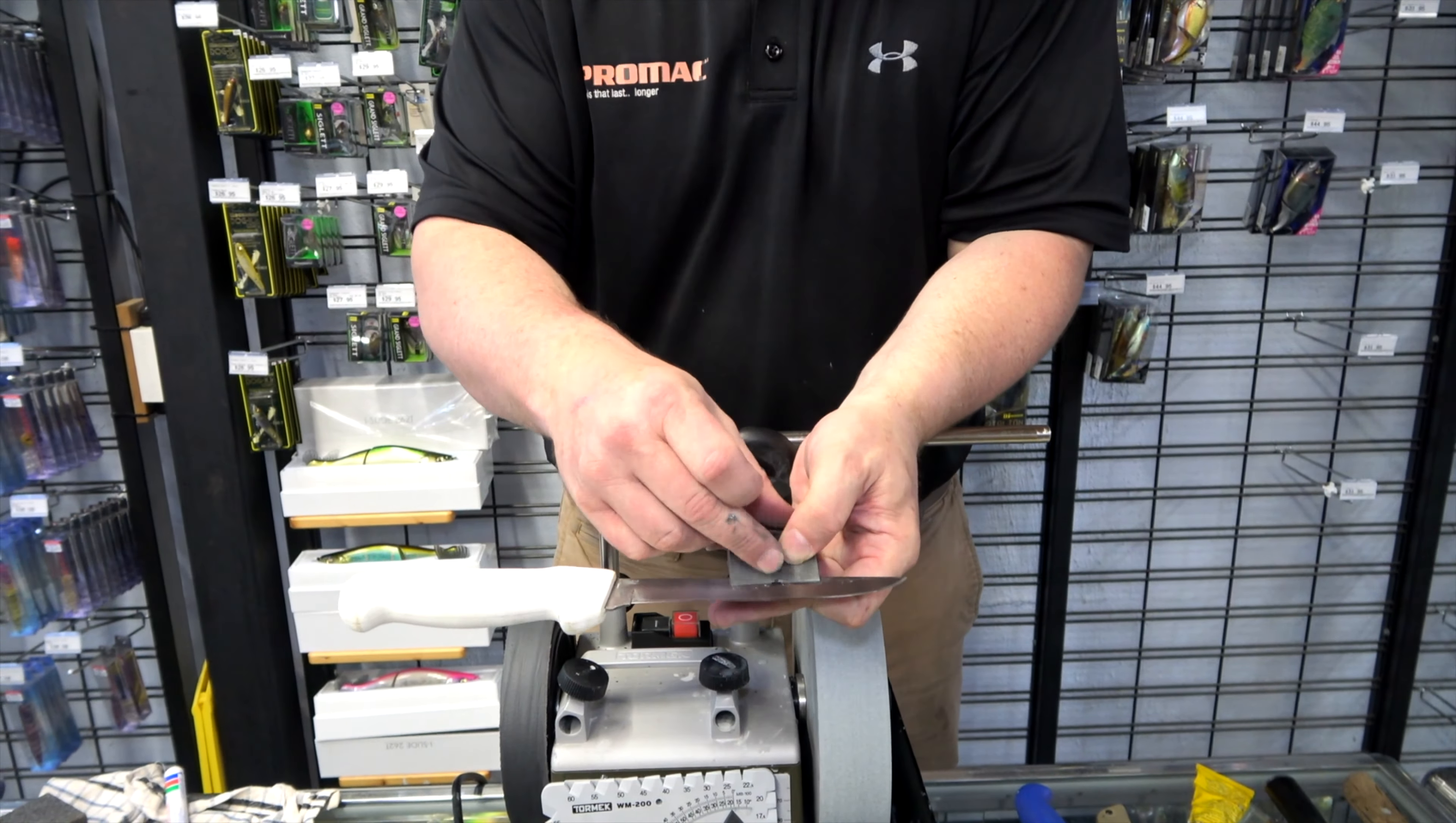We're going to be setting our edge at 20 degrees, so it'll give us a nice sharp edge with great durability. Set our angle at 20 degrees on the Angle Master. We've got our stone diameter at just under 200mm. Then we're going to put the gauge onto the knife, onto the wheel to set our angle.